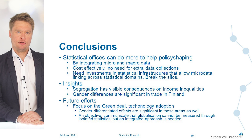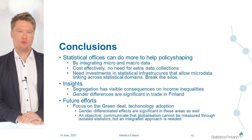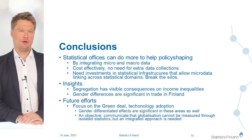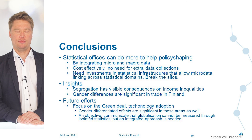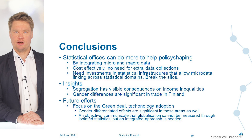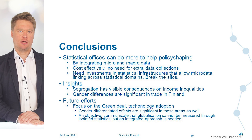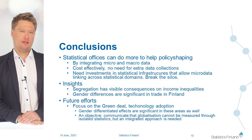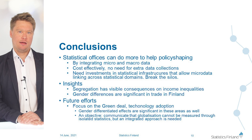To conclude: statistical offices can do more to help policy makers by integrating micro and macro data — these are cost-effective ways to produce new statistics without the need to collect new data through surveys. The key is investing in statistical infrastructures that allow linking of data across statistical domains. We have seen interesting insights from Finland on the analysis of trade and gender. Segregation has visible consequences on income inequalities, and this seems to work through international trade. As gender has strong explanatory power, it is a good breakdown to present in official statistics — and needless to say, we would like to make that explanatory power disappear. Thank you very much.